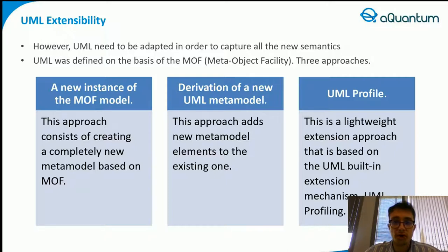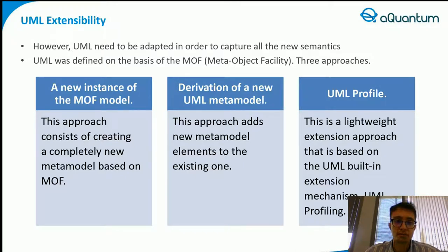As it was defined on the basis of the Meta-Object Facility, which is a metamodel, UML is therefore a metamodel used to define different UML models, and its extension consequently consists of extending the metamodel. It is possible to extend it by principally following three different approaches. The first is a new instance of the Meta-Object Facility model, which consists of creating a completely new metamodel based on the Meta-Object Facility. The result of this heavyweight approach is a new domain-specific modeling language.